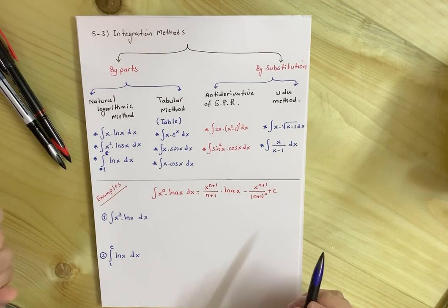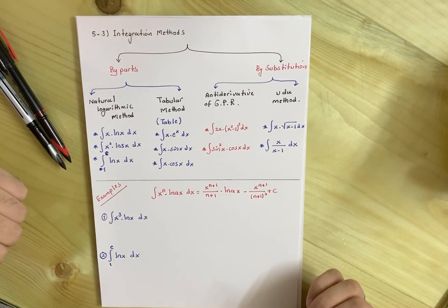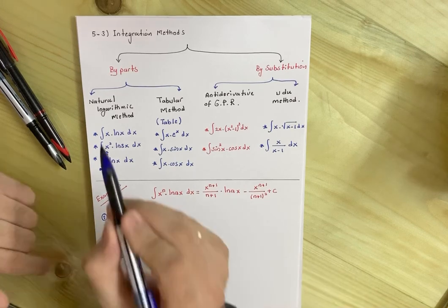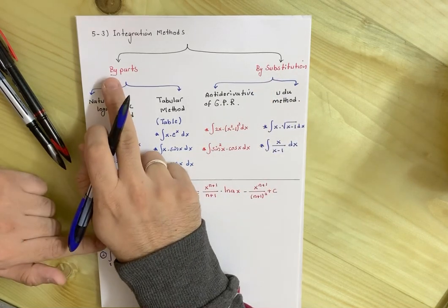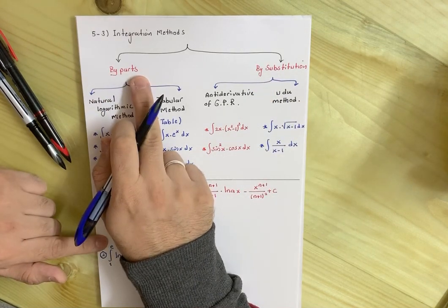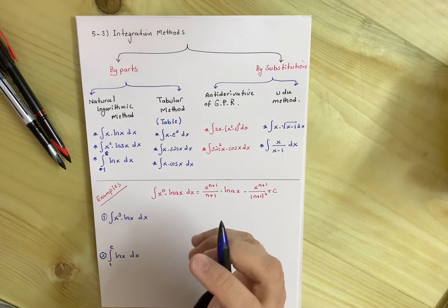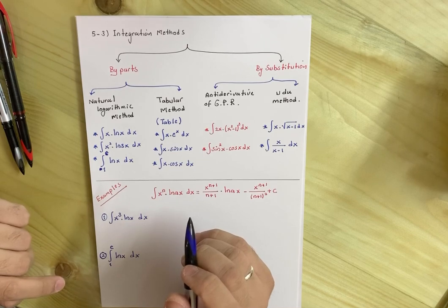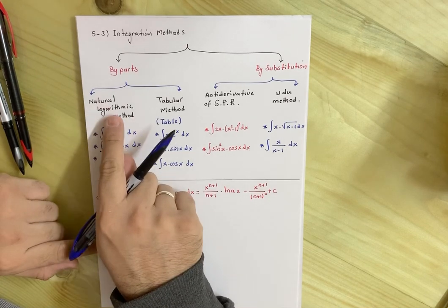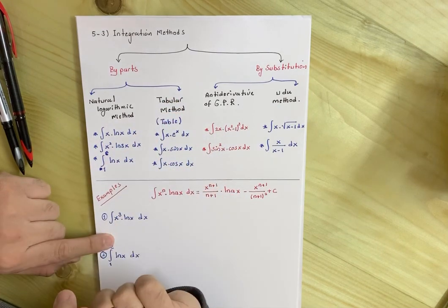Integration methods, in fact, are so many, but in our book they are classified into two types: integration by parts and integration by substitution. Integration by parts is classified into two types: natural logarithmic method and tabular method.